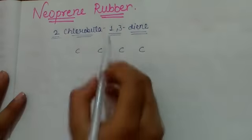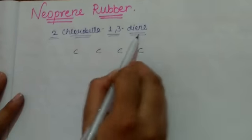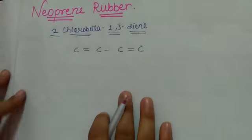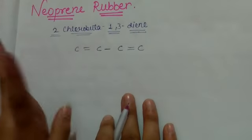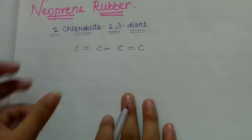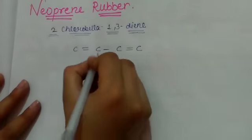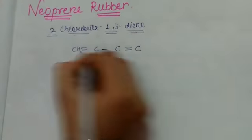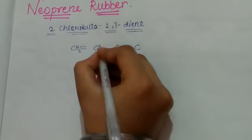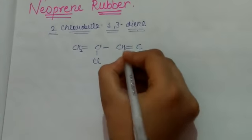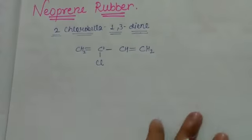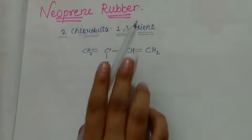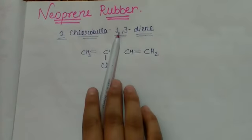On second carbon we have a chlorine atom. Now CH2, C, CH, and CH2. Now we have 2-chloro-buta-1,3-diene from which we'll make neoprene rubber.